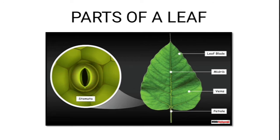These tiny pores act like a nose for the plants — they help in respiration. Just as our nose helps us take in air and leave out carbon dioxide, leaves also take in air and absorb carbon dioxide from it. Leaves need carbon dioxide to breathe in, whereas animals require oxygen.